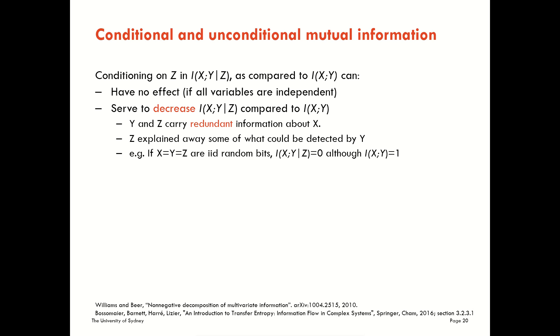An example here is if X, Y, and Z are all copies of one another. If we assume that they're all i.i.d. random bits, then we would have a conditional mutual information of zero, even though there's actually full information of one bit mutual information between X and Y.